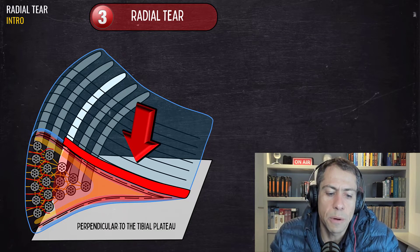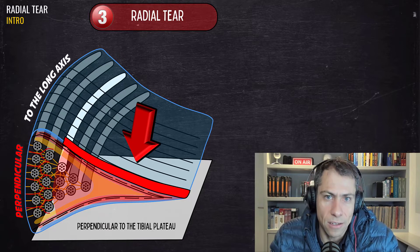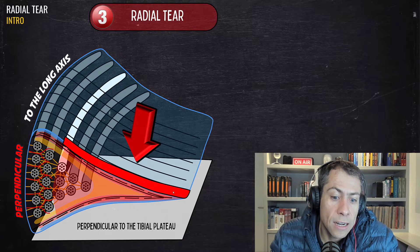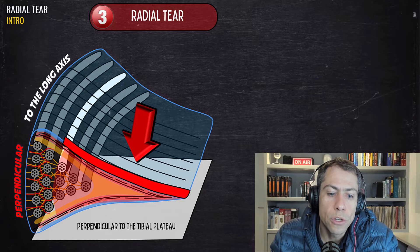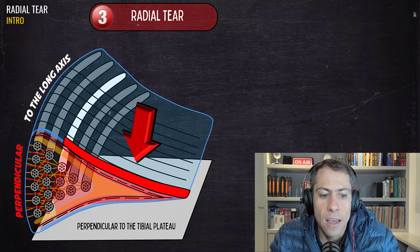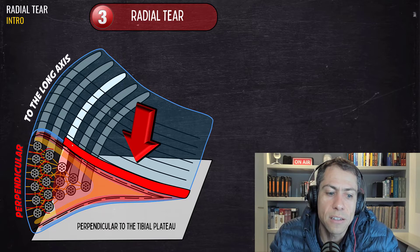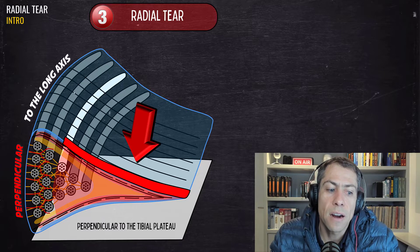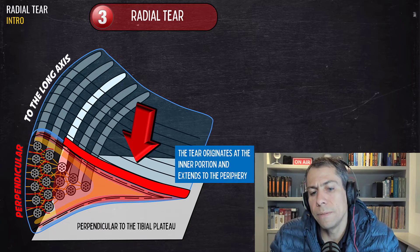The radial tear is perpendicular to the articular surface, perpendicular to the tibial plateau, and perpendicular to the meniscus long axis. The tear is a vertical tear, but it is parallel to the short axis of the meniscus — that's why it's called a radial tear. To differentiate: radial tears are parallel to the short axis, while longitudinal tears are parallel to the long axis of the meniscus.